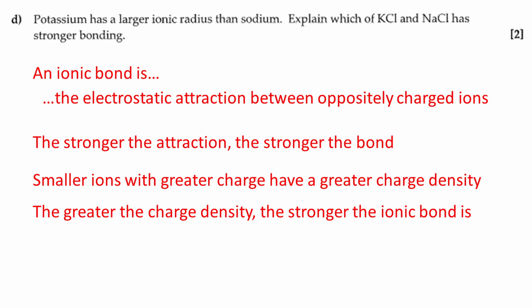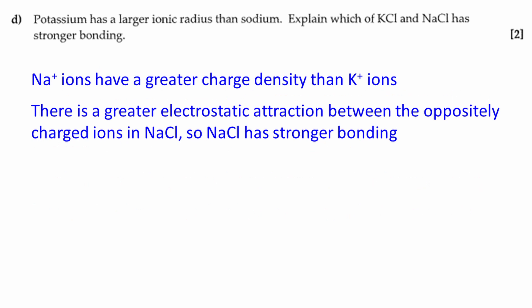Smaller ions with a greater charge have a greater charge density. The greater the charge density, the stronger the ionic bond. It is possible to go into more depth to explain ionic bond strength, but this is not necessary at level 3. To address the question, Na+ ions have a greater charge density than K+ ions. There is a greater electrostatic attraction between the oppositely charged ions in sodium chloride, so sodium chloride has stronger bonding.